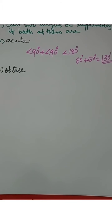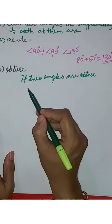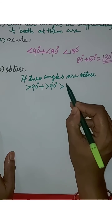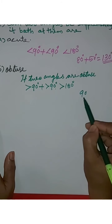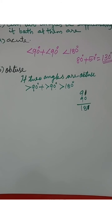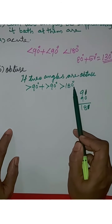Next, obtuse. What is an obtuse angle? If an angle is more than 90 degrees but less than a straight angle, it is called an obtuse angle. If two obtuse angles are added — more than 90 plus more than 90 — we get more than 180 degrees. The two obtuse angles cannot be supplementary because their sum will always be more than 180 degrees.